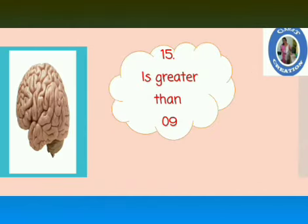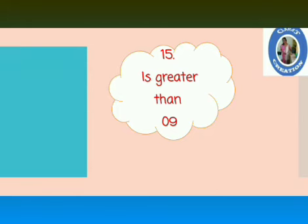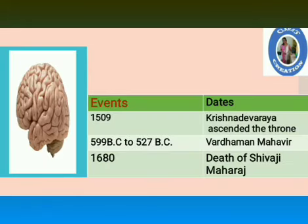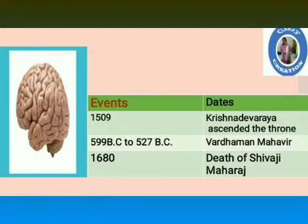So now look here: 15 is greater than 9, and we get the answer — 1509, Krishnadevaraya ascended the throne. Here I have used a trick from mathematics, and this is how we associate, correlate, and link one subject with the other to work on our weaker areas.